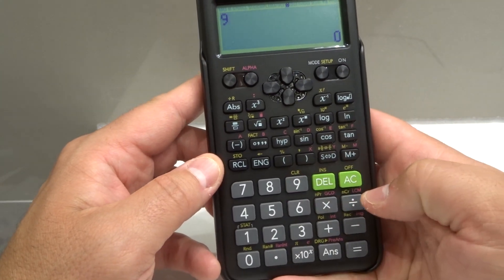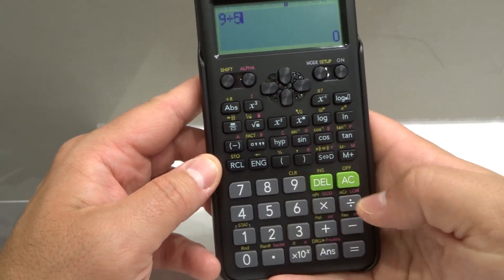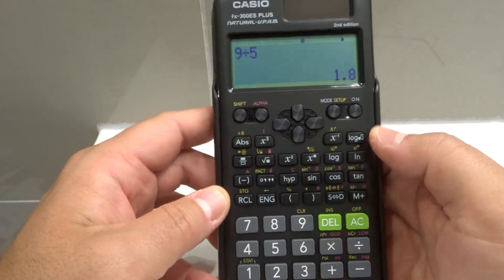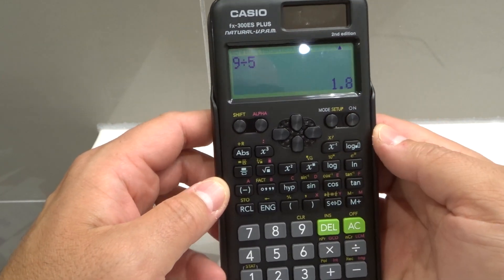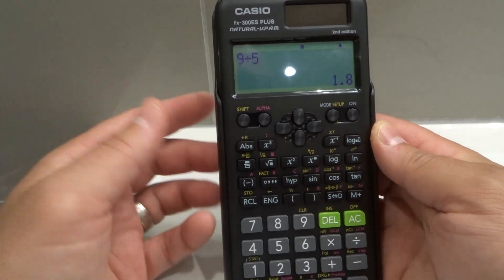So if I do 9 divided by 5 equals 1.8. I didn't have to push that button now. It's just constantly doing it in decimal format. It's a more permanent fix if that's what you are desiring.